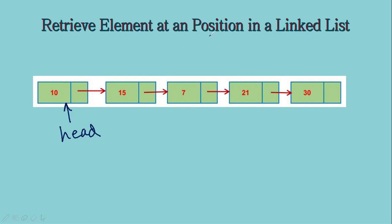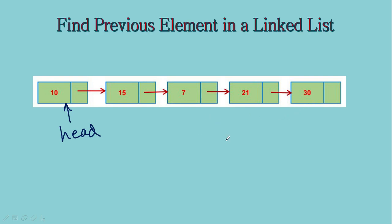Retrieving an element at a position — once again, when positions are involved, we have to keep in mind that the worst case can be the last node's position. So the complexity of this operation will depend on the number of elements — it's big O of N. Find previous element: suppose if we ask what is the previous element of 30, then I definitely have to come till 30, which is still the last node. So the time complexity will be big O of N.